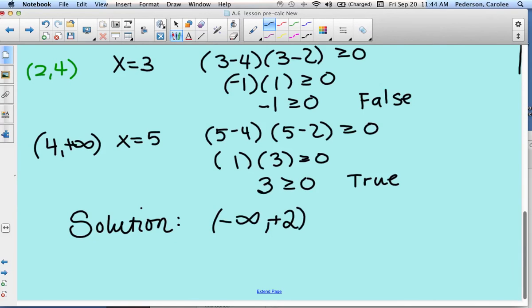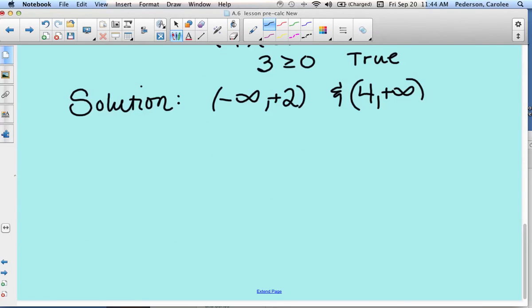The second interval we found was from 4 to infinity. Now we need to graph that solution on a number line. So our first solution is negative infinity to 2, and then our other solution is from 4 to infinity.